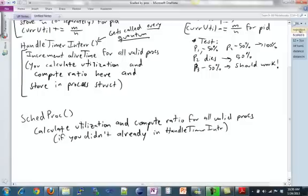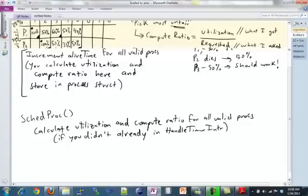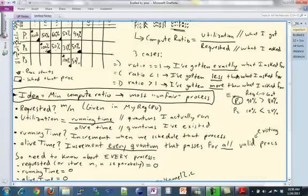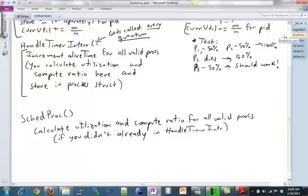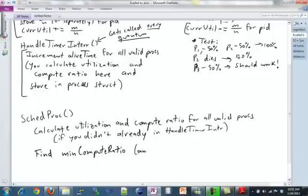Then, remember this big idea that we had that the minimum compute ratio is the most unfairly treating process. So, we want to go ahead and find that minimum compute ratio. And that's just a normal find-min loop compute ratio. And find the PID that goes along with that minimum compute ratio. We can call that min PID. And this is the most unfairly treating process.